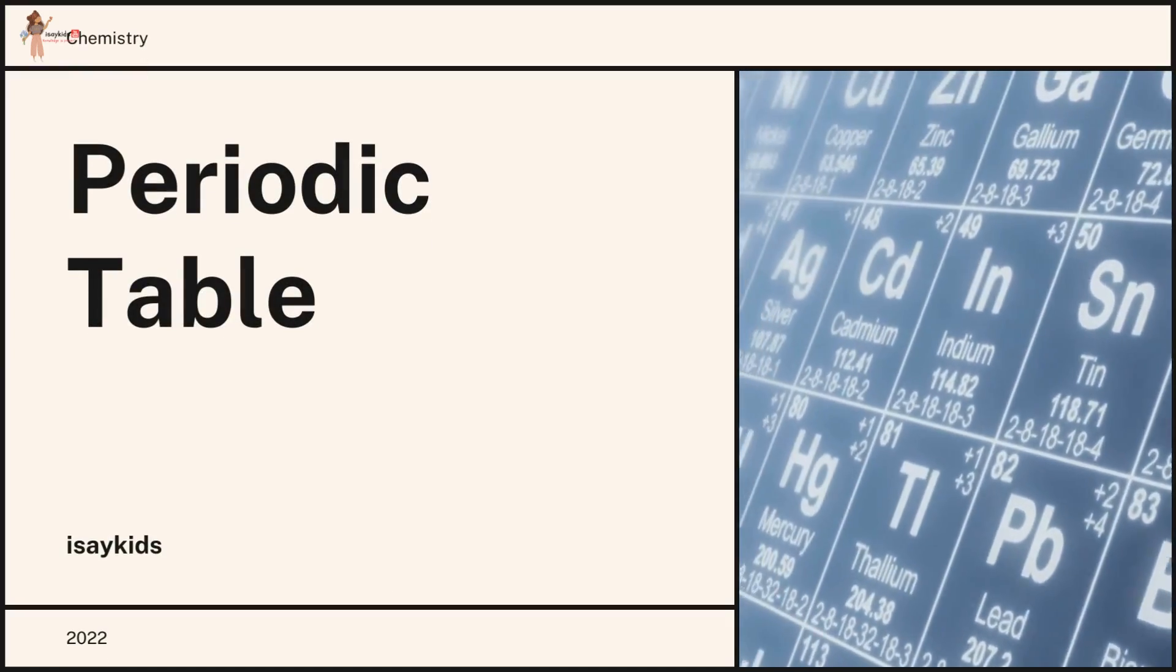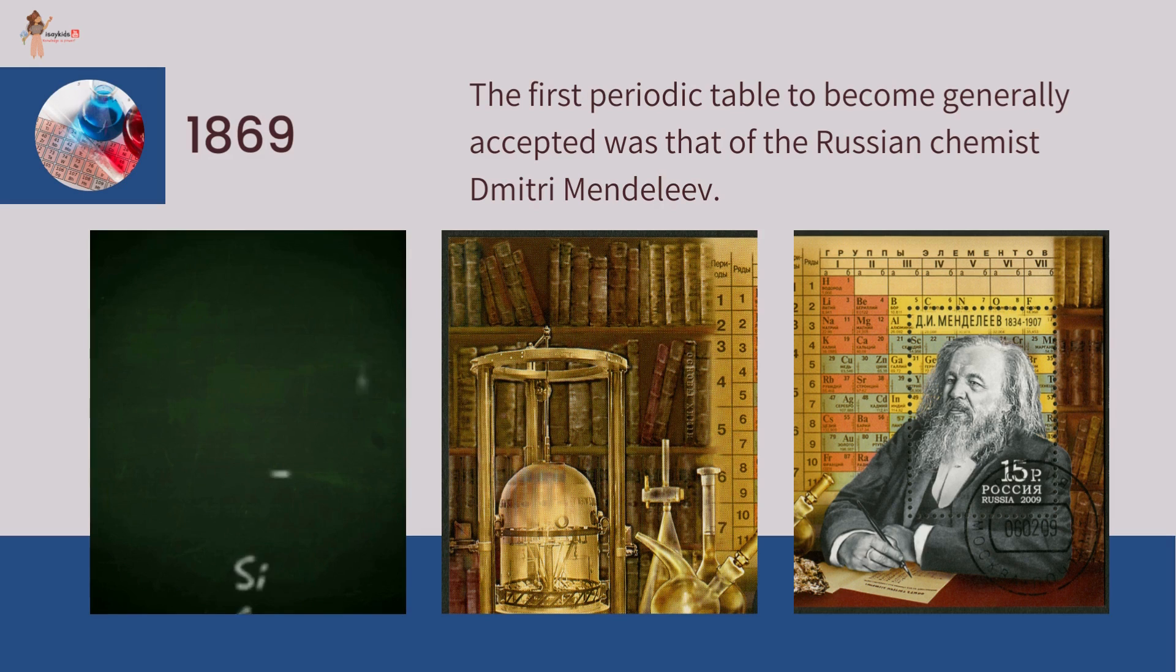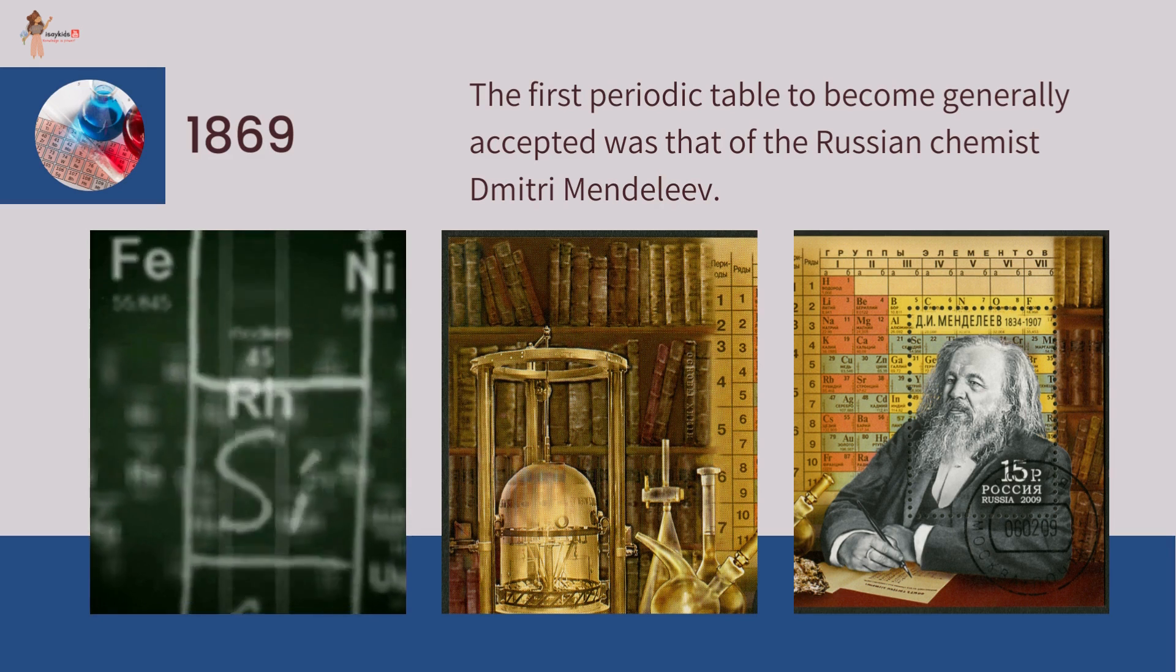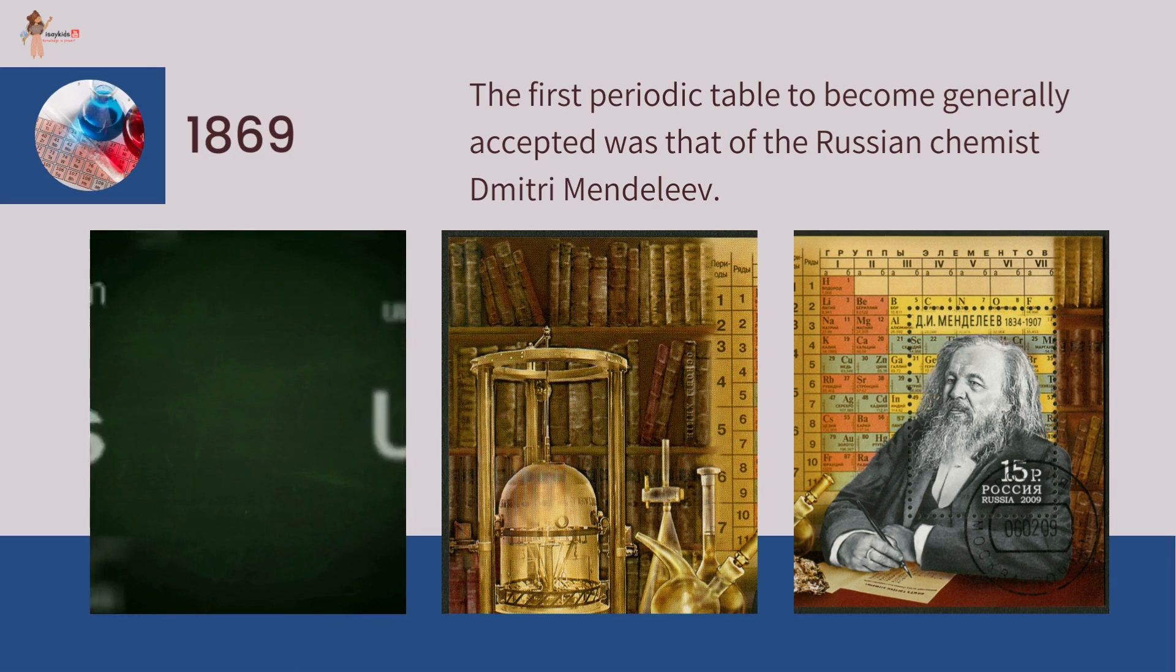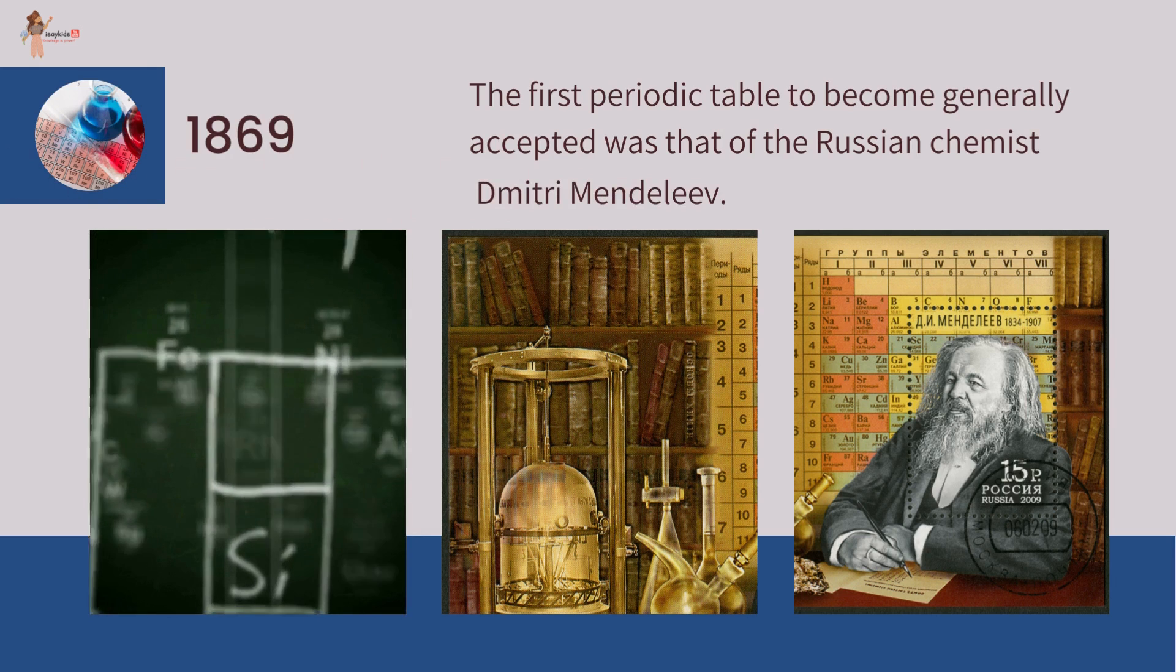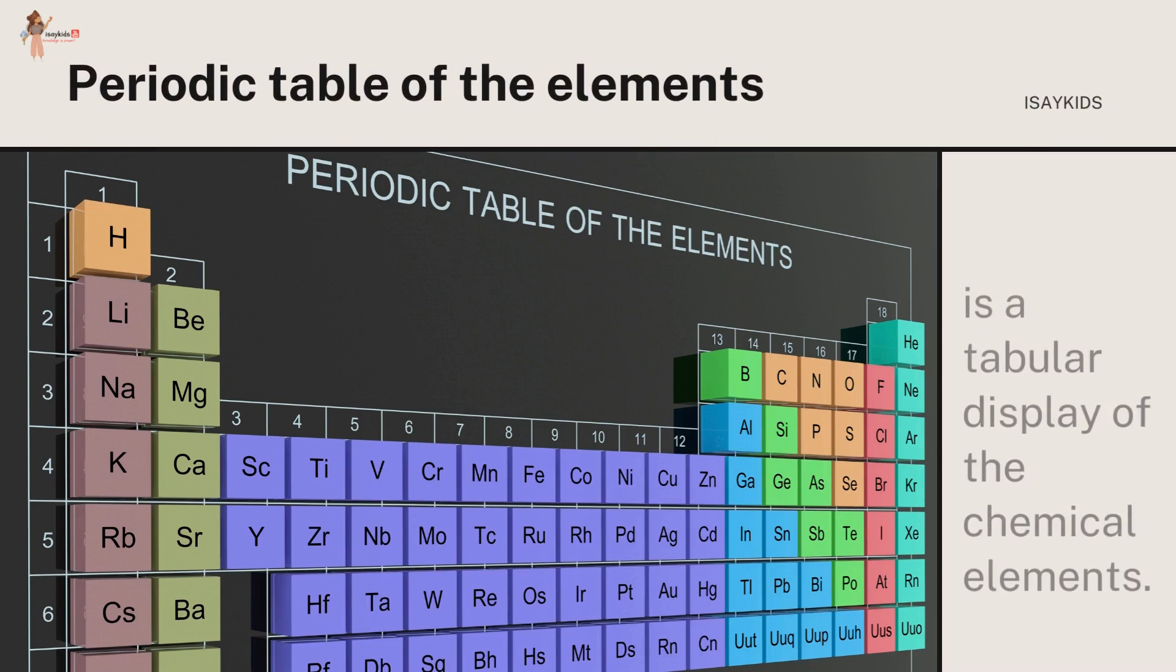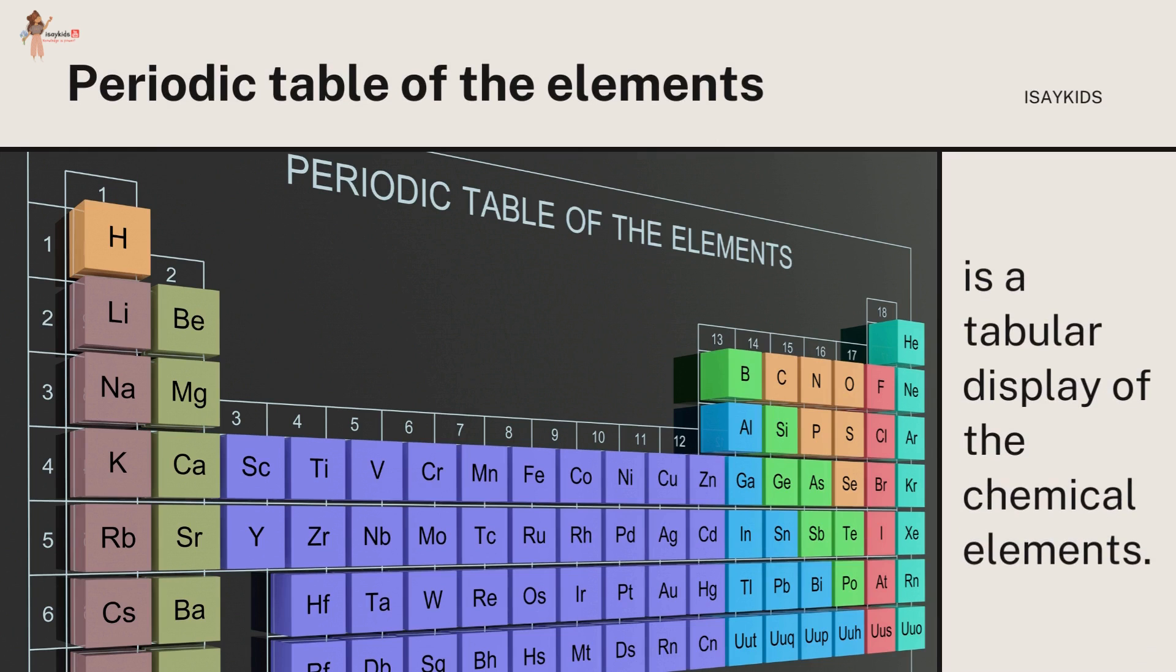Hi there, let's get to know the basics of periodic table today. The first periodic table to become generally accepted was that of the Russian chemist Dmitri Mendeleev in 1869. The periodic table is a tabular display of the chemical elements.